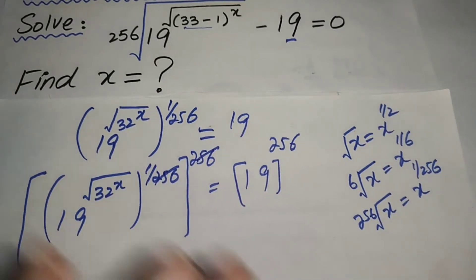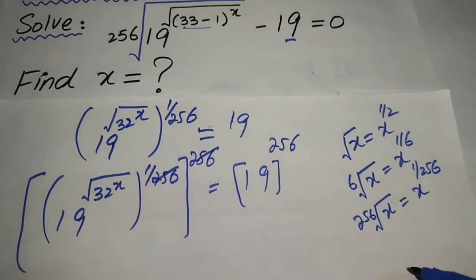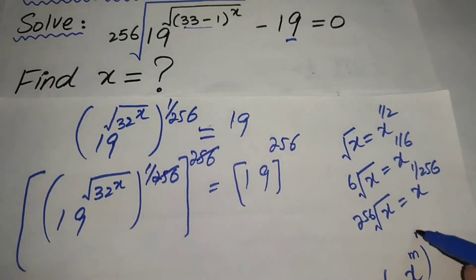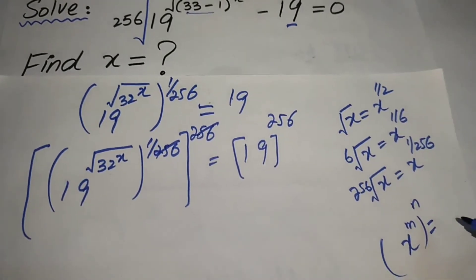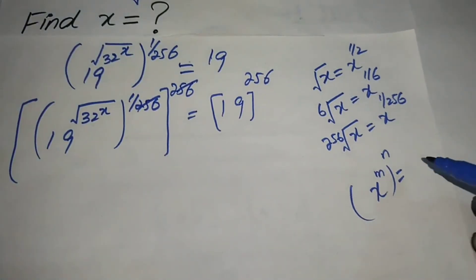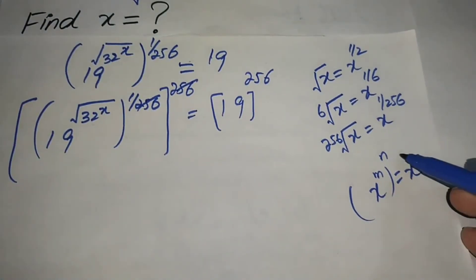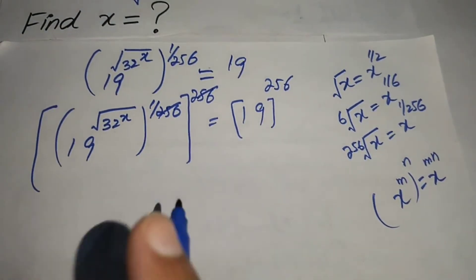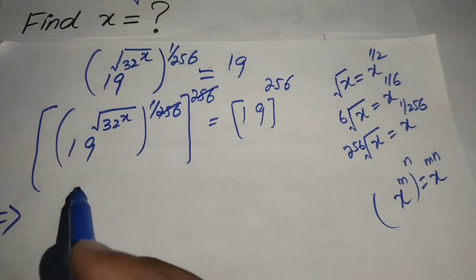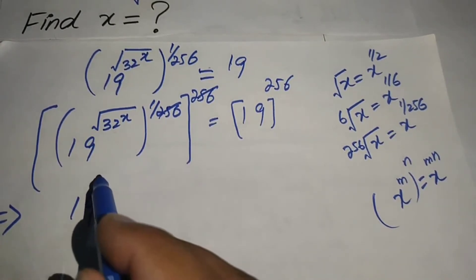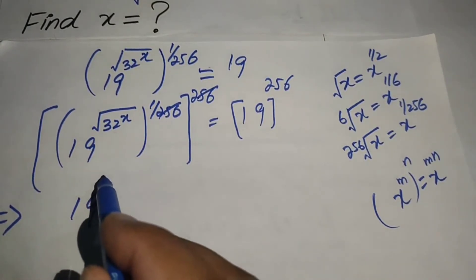Here we apply the power rule of exponents. The power rule of exponents states that x to the power m, raised to the power n, is equal to x to the power m multiplied by n. After some simplification, 19 to the power of square root of 32 to the power x equals 19 to the power 256.